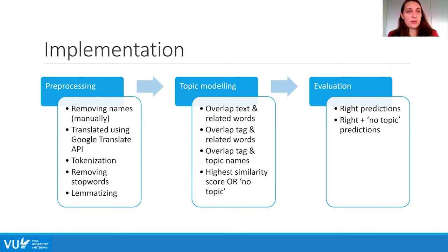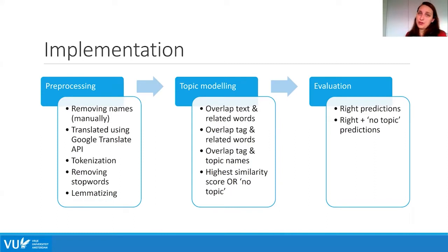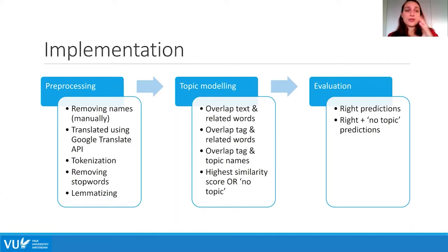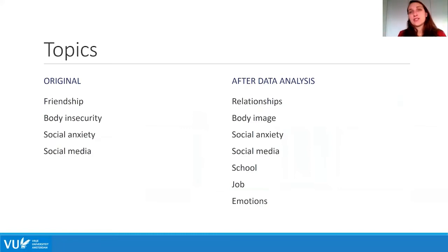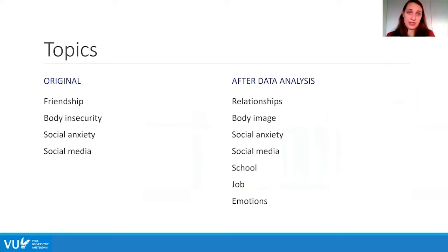The algorithm starts with a pre-processing phase. We first removed all names mentioned in the data for anonymity — one researcher did this manually so others couldn't see them during labeling. We then translated the text automatically with Google Translate, followed by tokenization, stop word removal, and lemmatization to prepare the text. With this prepared text we performed the topic modeling. We also created related word lists for each topic using the website relatedwords.org, selected the most relevant words, and pre-processed those lists in the same way as the participant data.